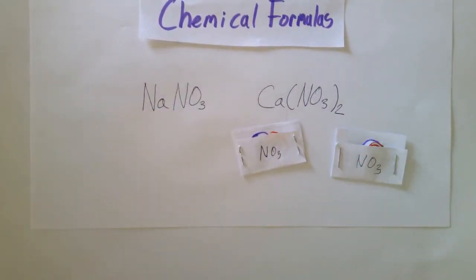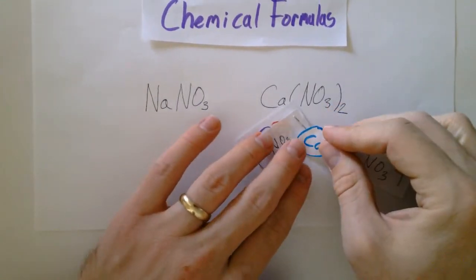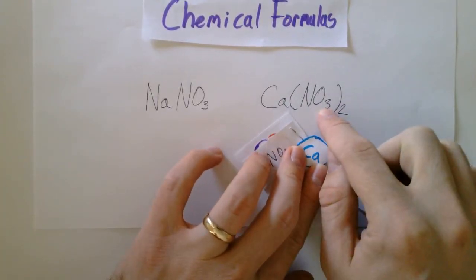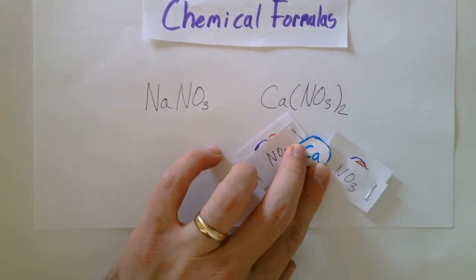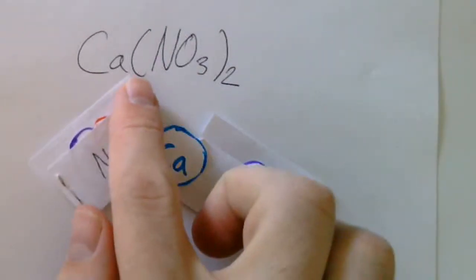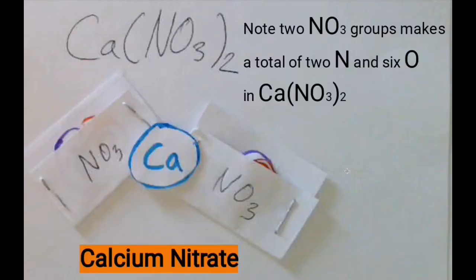And then we also have a calcium. So this calcium is going to bond to these two packets of NO3. And in each of these packets, you've got three oxygens and one nitrogen. And so that's kind of what the parentheses mean. It means that you've got a packet of NO3, and there are two of them. One, two. And so that is what calcium nitrate looks like.